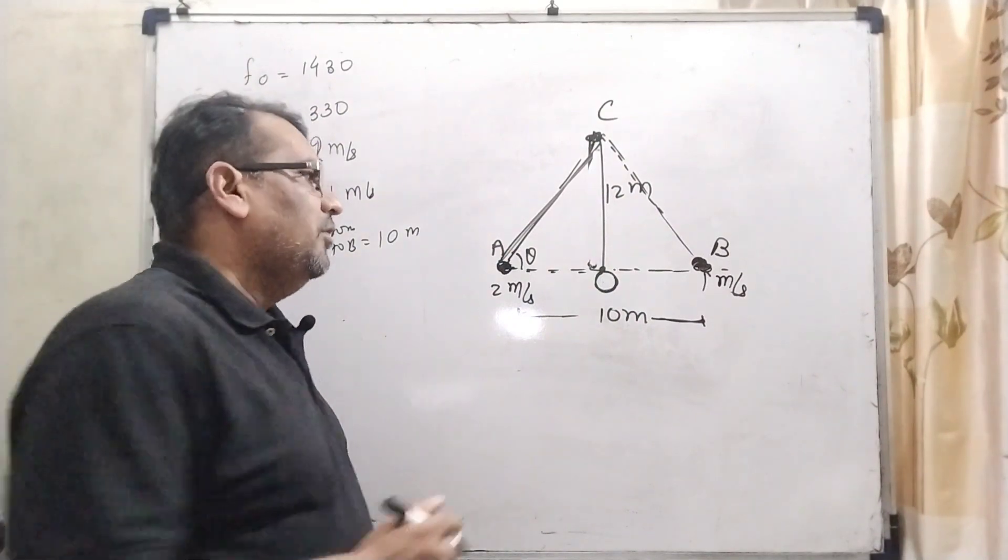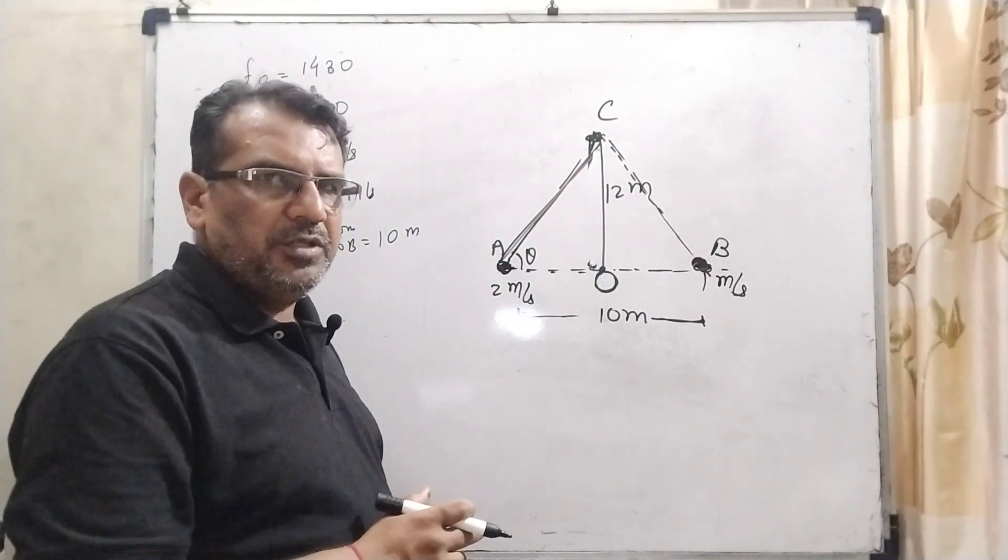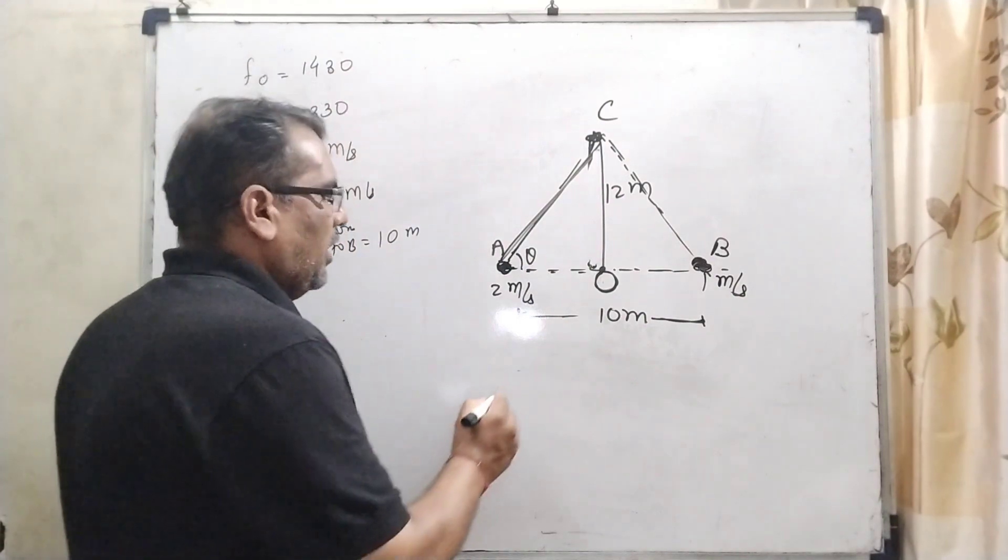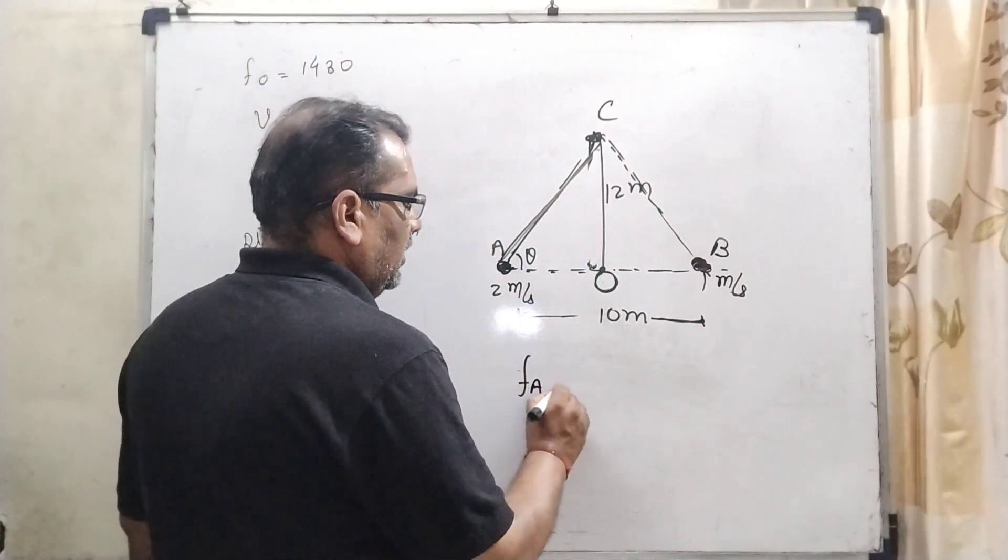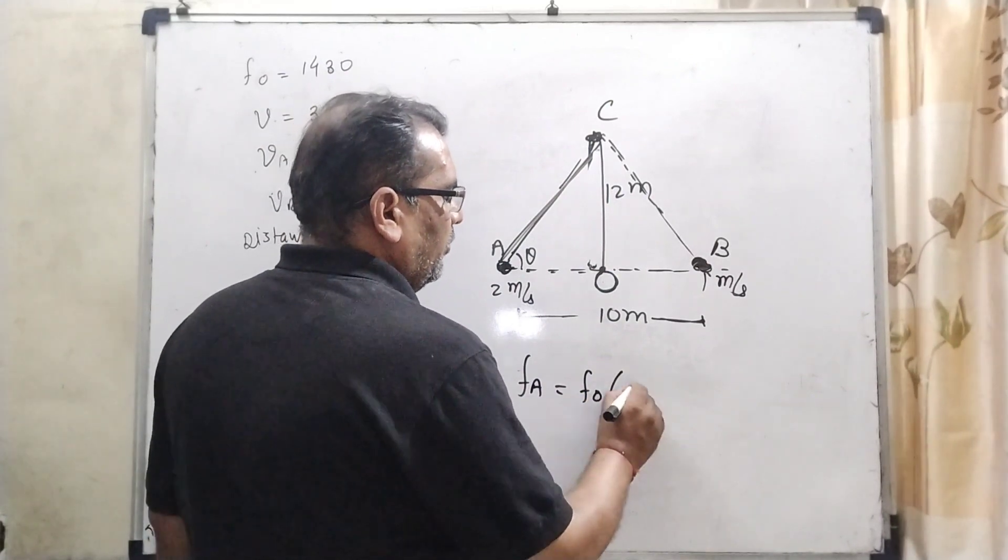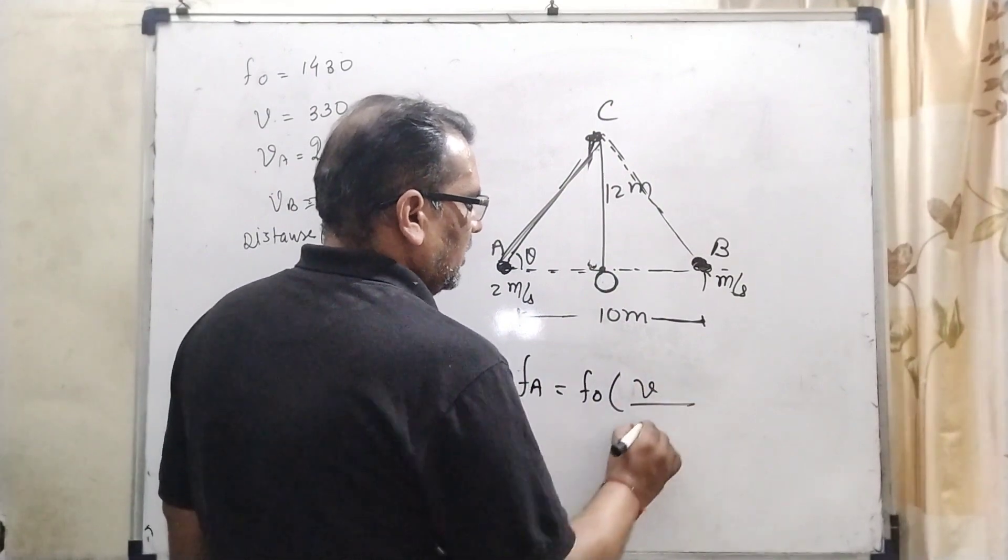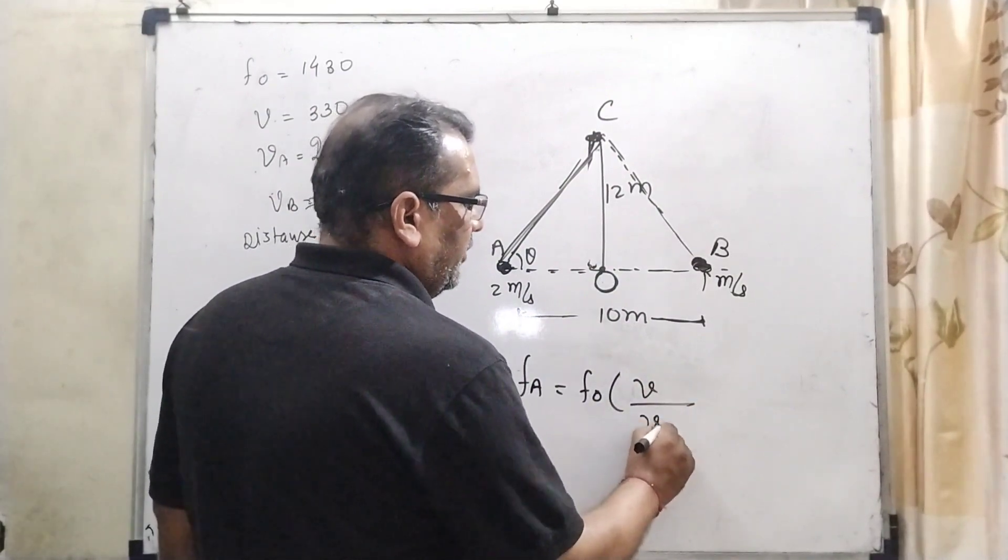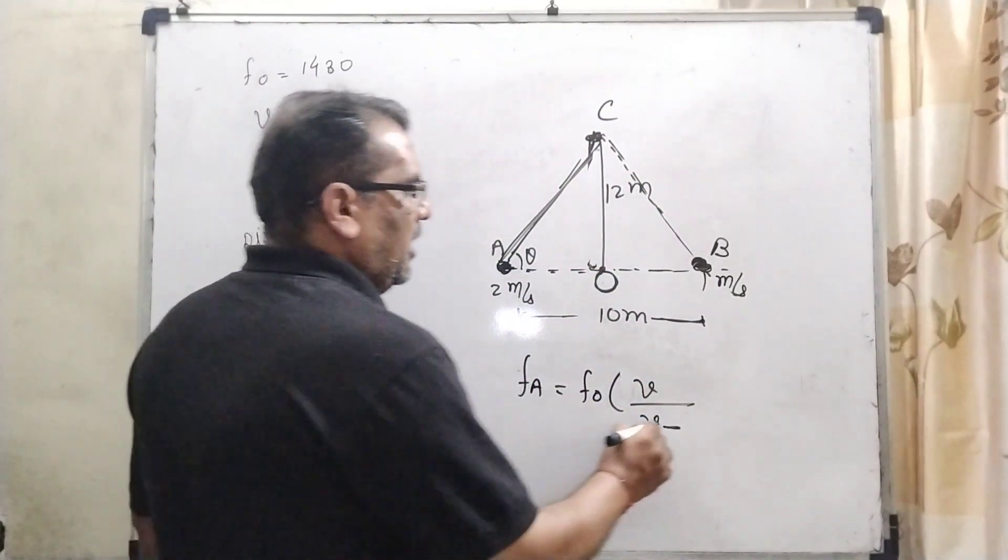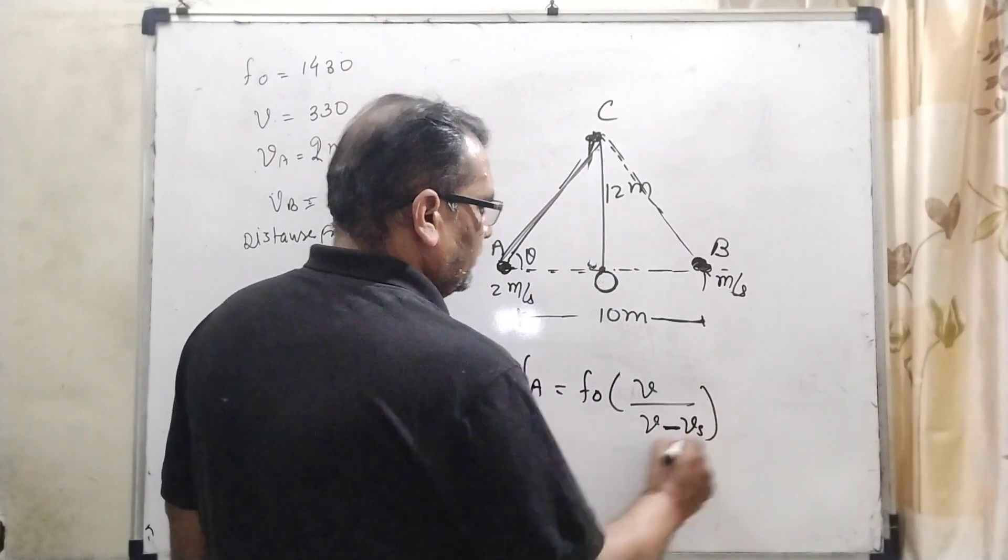As we know that when source of the sound is moving towards the stationary observer, then we use the formula: f' = f₀ × V / (V - Vₛ), where V is speed of sound in air and Vₛ is speed of source.